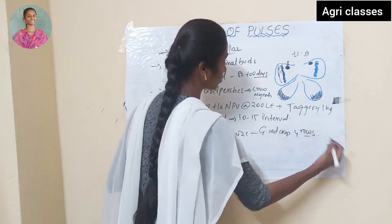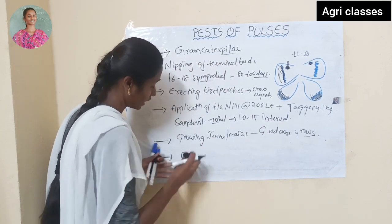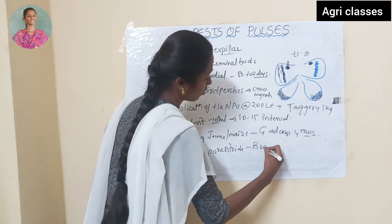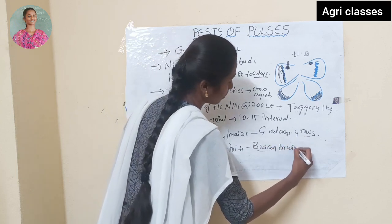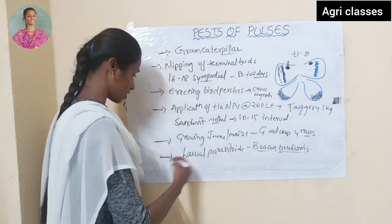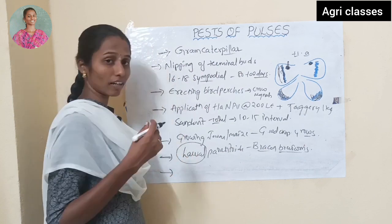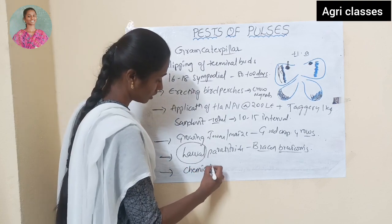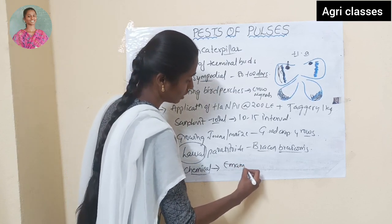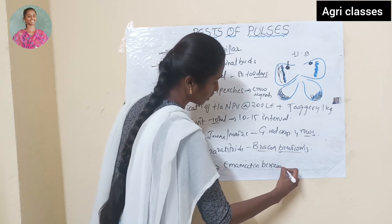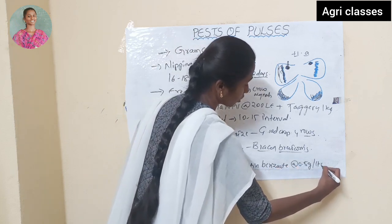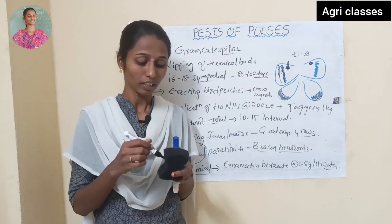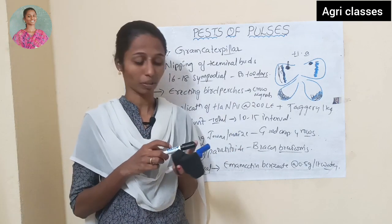Release of larval parasitoids like Bracon brevicornis — it will control the pest population and the larvae. After all this treatment, if there is any leftover pest, we can also use the chemical method: spray emamectin benzoate at the rate of 0.5 grams per litre of water all over the crop. These are the different management methods for the control of Helicoverpa armigera.